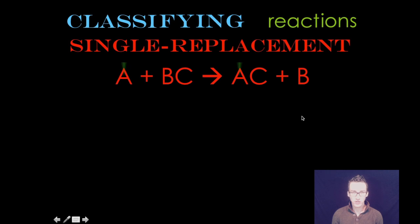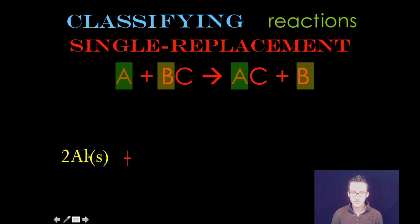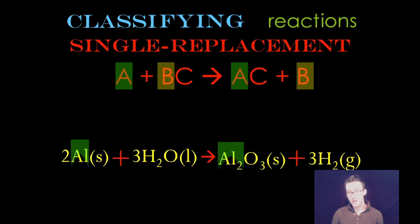Let's do an example. We've got two moles of solid aluminum plus three moles of liquid water forms one mole of solid aluminum oxide and three moles of hydrogen gas. Again, recognize here, the aluminum is the element. It displaces the hydrogen, kicks it to the curb so that hydrogen is by itself.